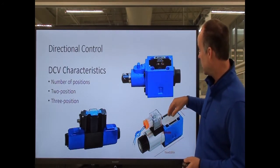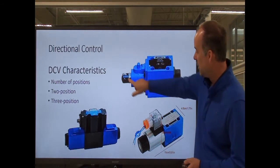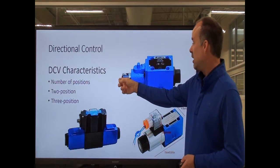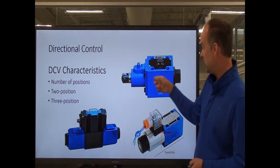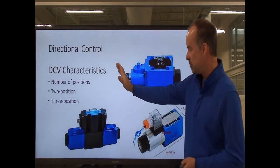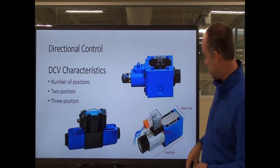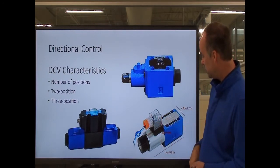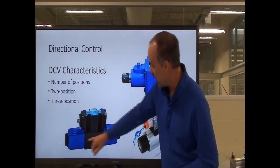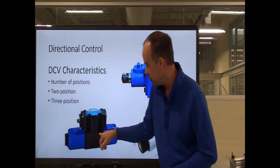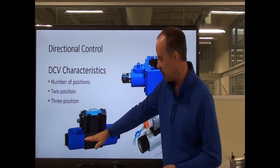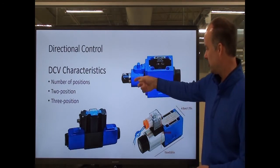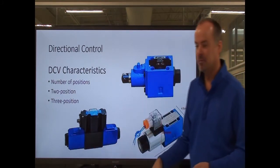This valve back here is cam-operated — some moving piece of equipment would hit this and push it in to shift the valve. This would just be a two-position valve, and then when it came off the cam, the spring would push it back out. Here's a solenoid-operated two-position valve — when I energize this, it creates a magnetic field and shifts the spool. And here I've got a three-position valve because I've got an operator on both sides, so I can shift the valve one way or back the other way, and neither one energized puts it in the center position. You identify whether it's two-position or three-position by the number of operators.